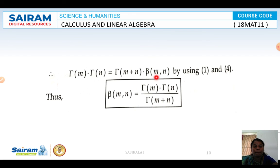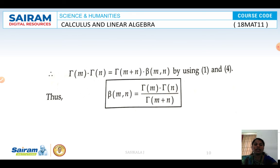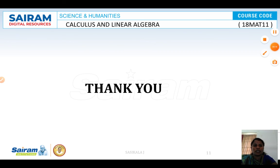Therefore, beta of m comma n is equal to gamma(m) into gamma(n) divided by gamma(m plus n). So the relation between beta and gamma functions is: beta(m, n) equals gamma(m) times gamma(n) divided by gamma(m plus n). That's all for the relations between beta and gamma functions. Thank you.